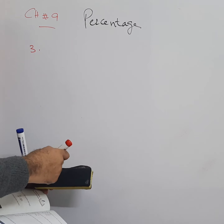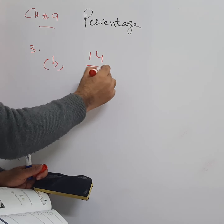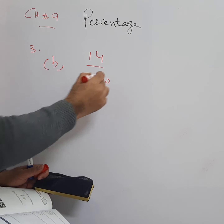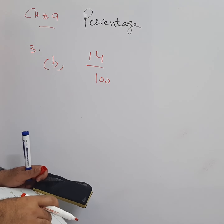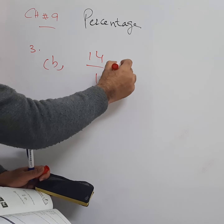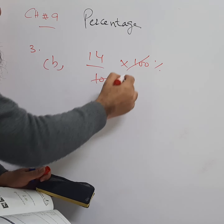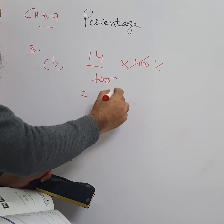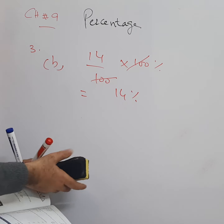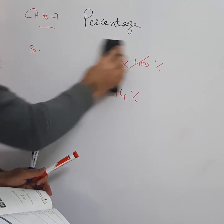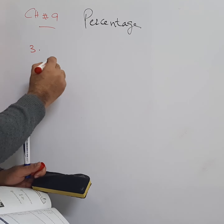Part b is 14 over 100. We convert it into a percentage by multiplying with 100 percent. The 100s cancel, giving 14 percent as the answer for part b. Then we have part c: 65 over 100.